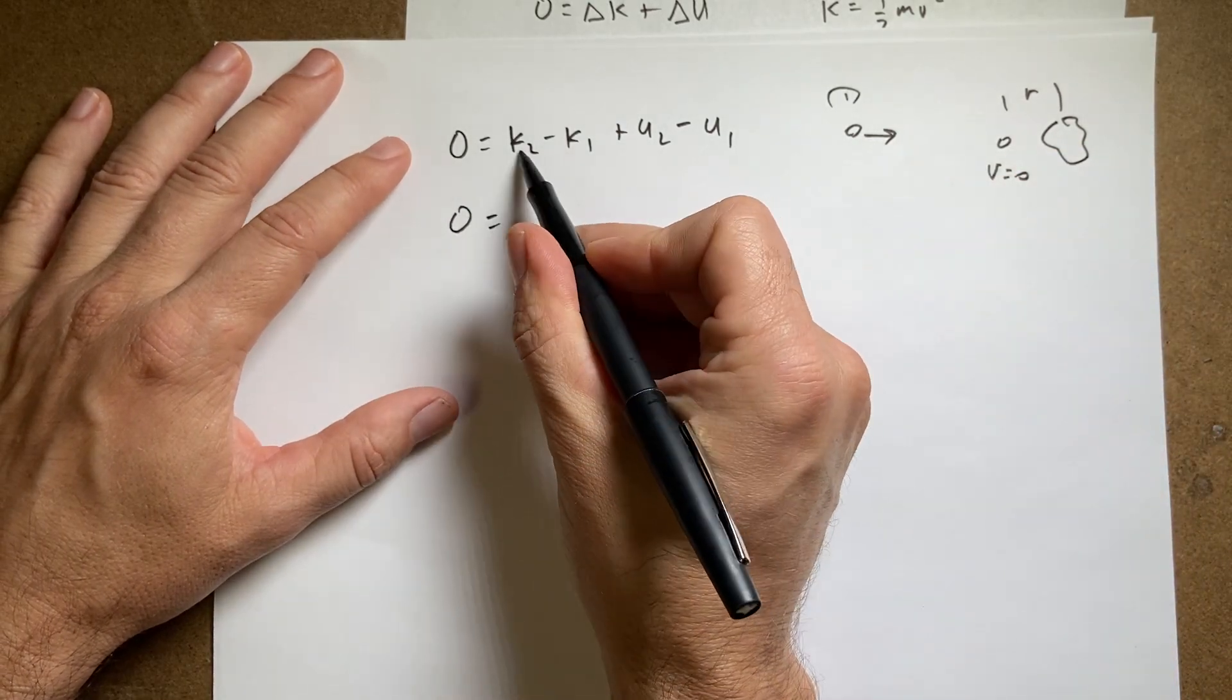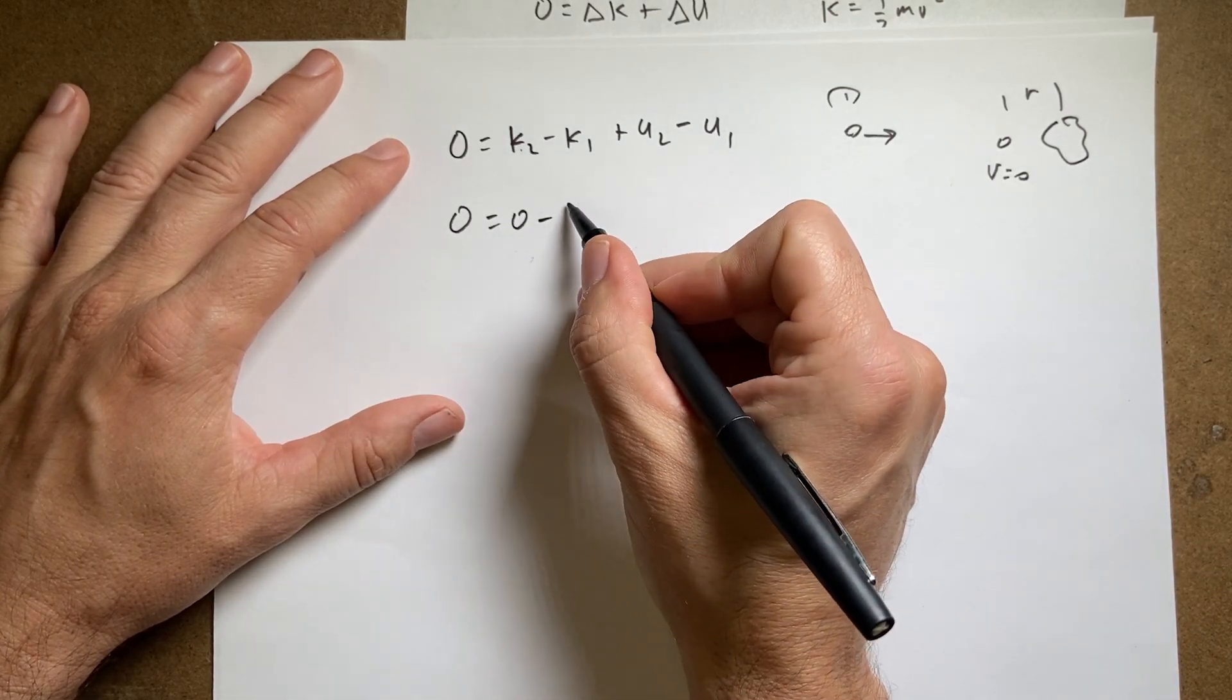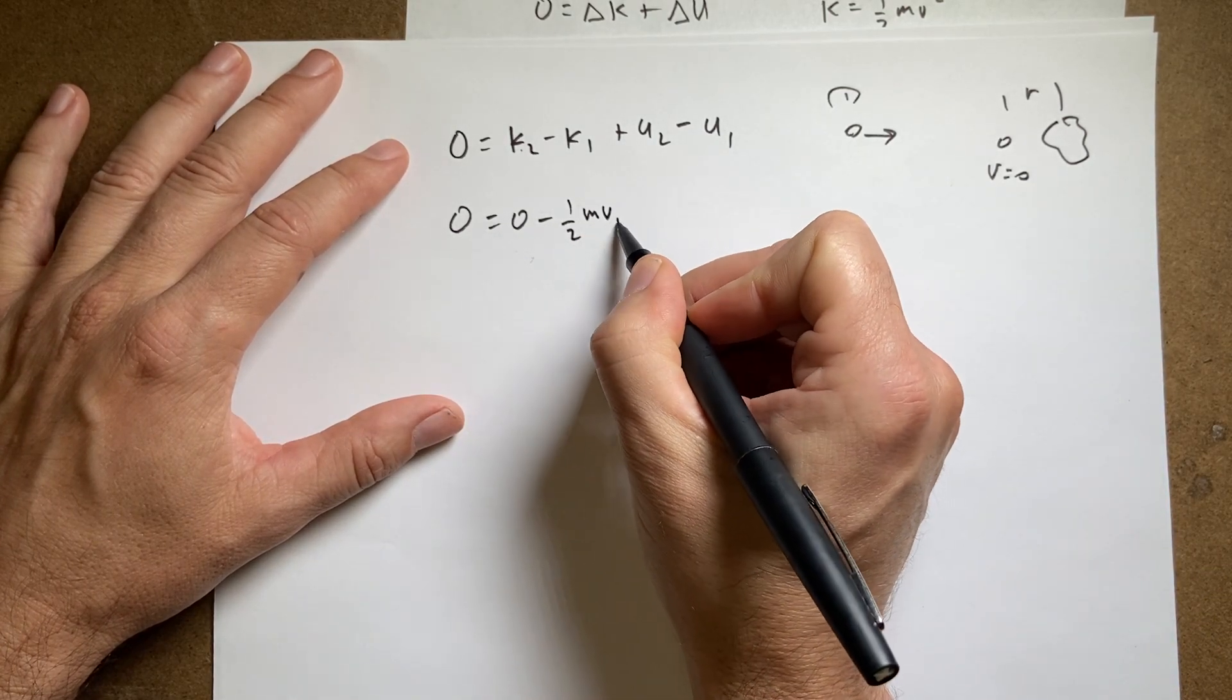So zero k2 at the closest point is going to stop. So it's going to be no kinetic energy. Minus one half mv1 squared.